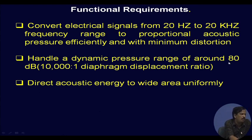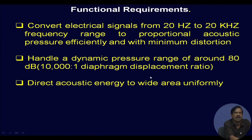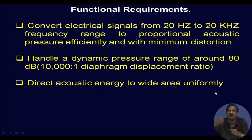It must handle a dynamic pressure range of 80 dB, that is a 10^4 to 1 diaphragm displacement ratio, and direct acoustic energy to a wide area uniformly. The purpose of the loudspeaker in a room is that whatever electrical signal comes from the amplifier it should convert to acoustic signal and distribute uniformly in the room. This is the functional requirement of a loudspeaker.